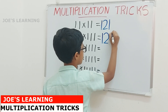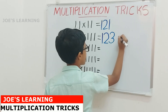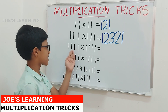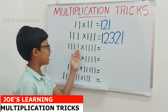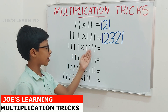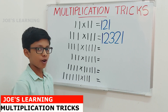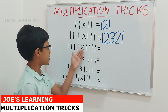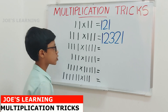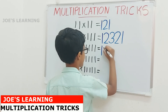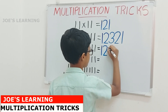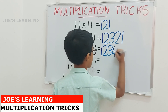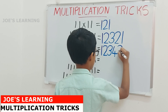We keep increasing until we reach number 3 and then start decreasing until we reach number 1. Now let us move on to 1111 multiplied by 1111. First we find the number of digits — in this case it is 4, as there are 4 digits in both numbers. So we keep increasing until we reach number 4, and then start decreasing until we reach number 1.